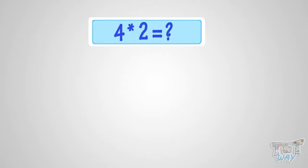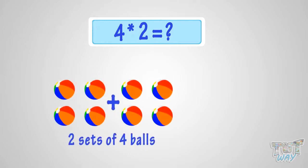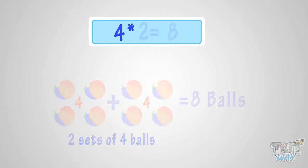What is four multiplied with two? It is the same as two sets of four balls. Four plus four equals eight. So, it is eight balls. That is, four multiplied by two is eight.